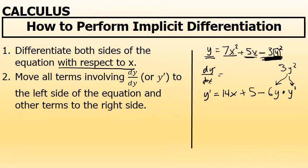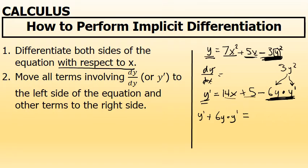Step 2: after performing implicit differentiation, there are going to be some terms in the derivative that involve a factor of y prime. In this problem, we have two terms that involve a y prime. Step 2 says move all terms involving y prime to the left side of the equation, and the other terms to the right side. I have a y prime already on the left side, but I also need to move 6y times y prime to the left side by adding it to both sides. The other two terms, 14x and 5, do not involve a factor of y prime, so they stay on the right side.